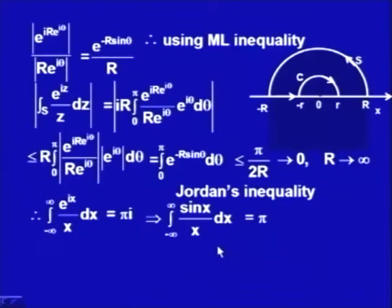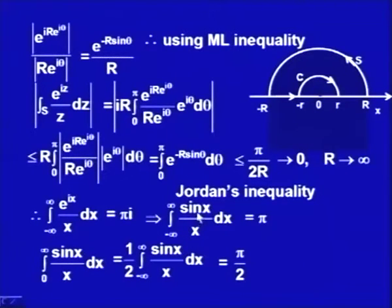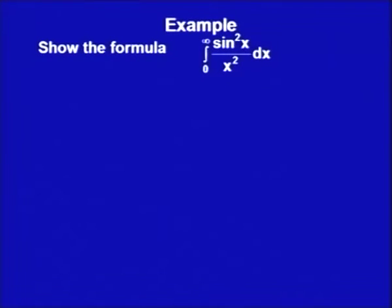Since sin(x)/x is an even function — because sin(−x) = −sin(x) and −x, so f(−x) = f(x) — the integral from 0 to ∞ of sin(x)/x dx is half of the integral from −∞ to +∞, giving π/2. Let us now consider one more different kind of example.